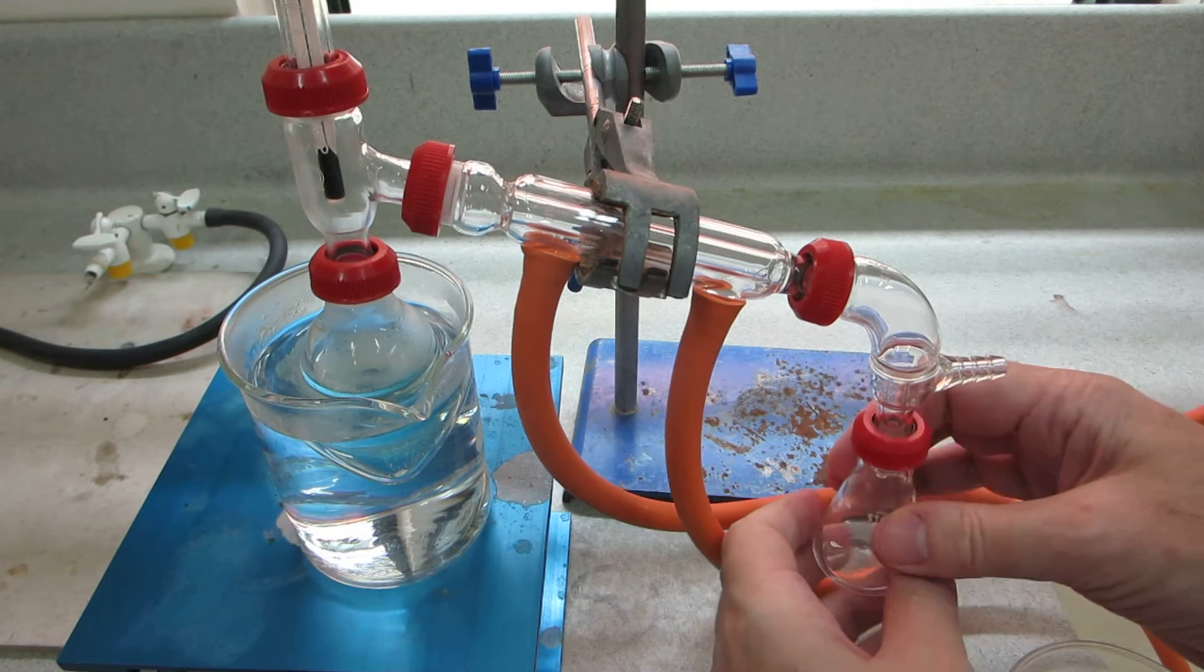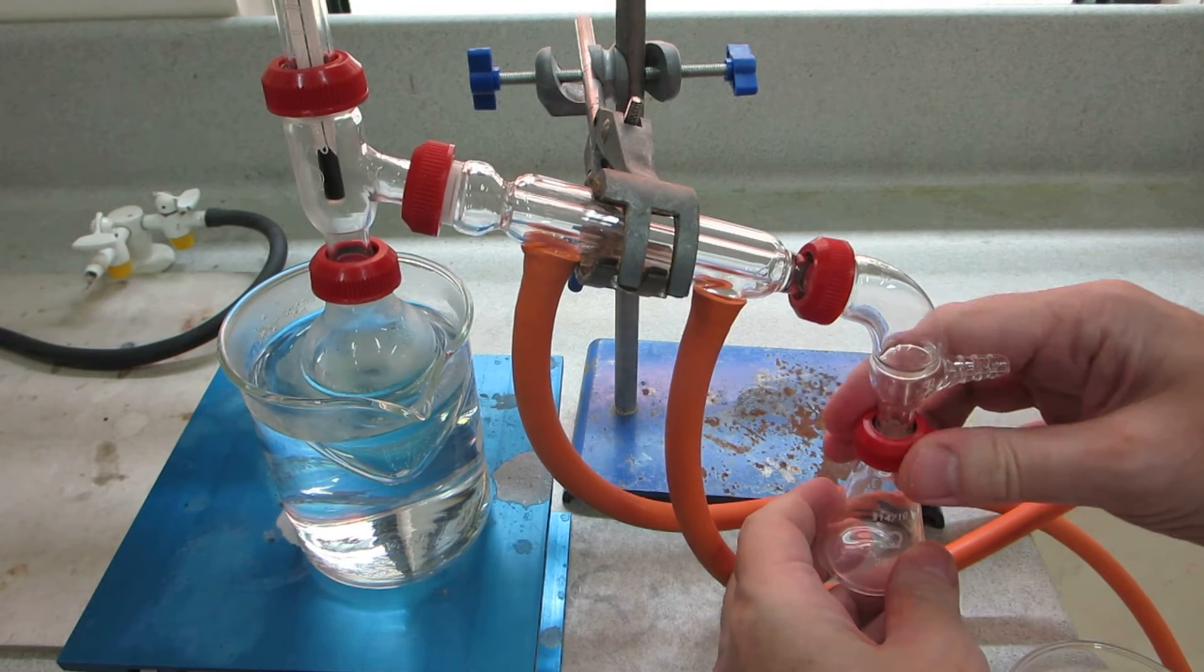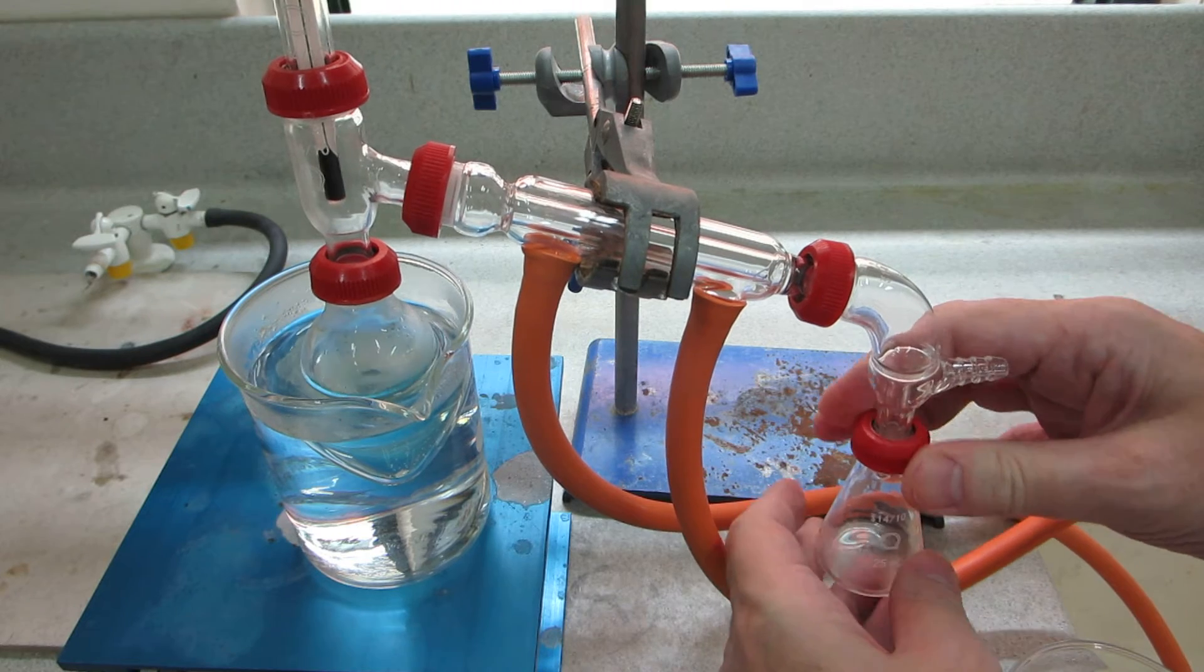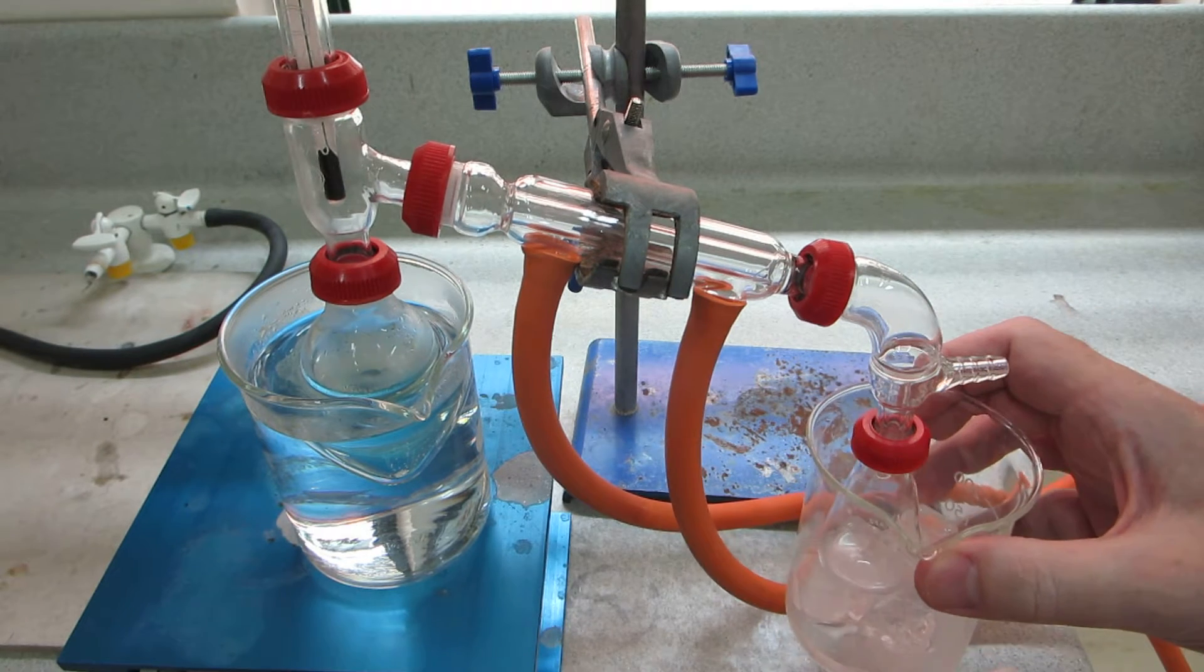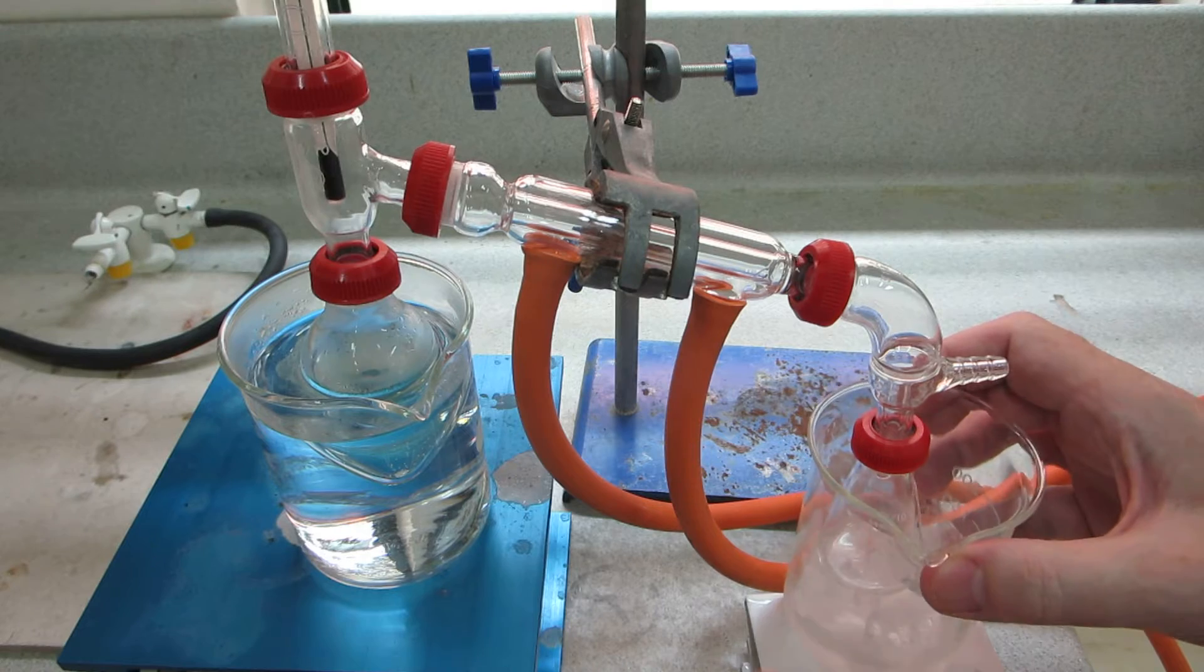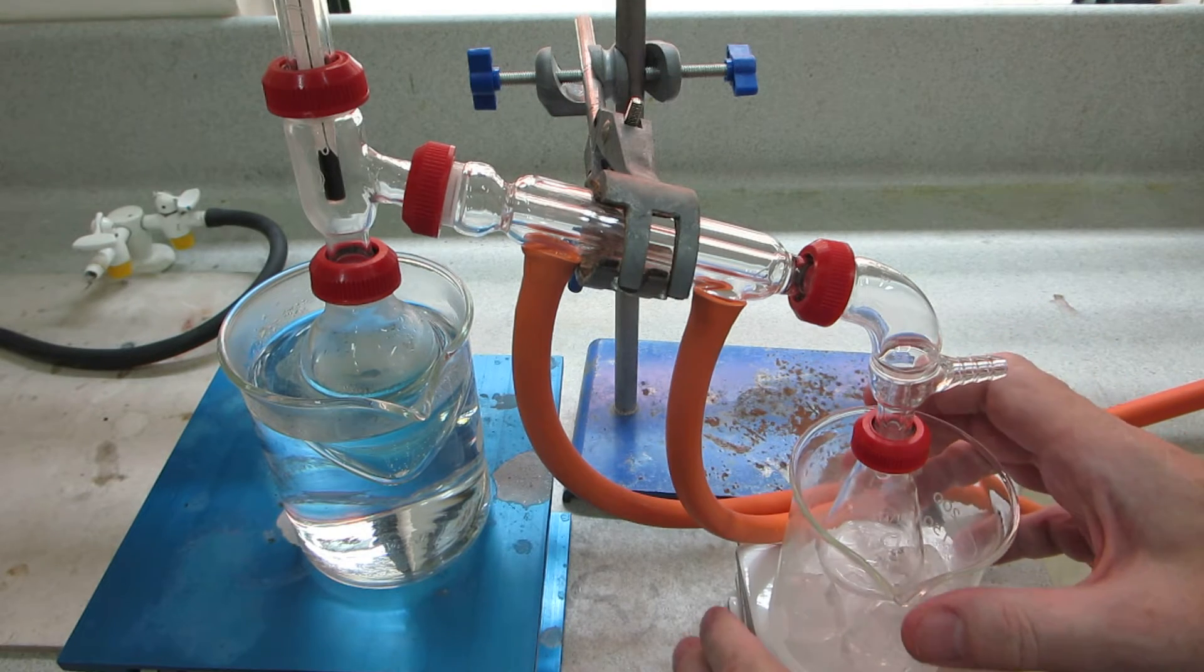So, if we attach the conical flask to the distillation apparatus, we're going to take this, and then surround with ice.